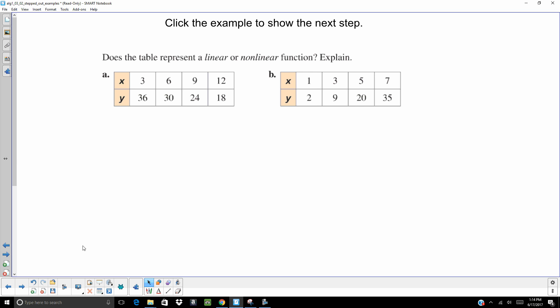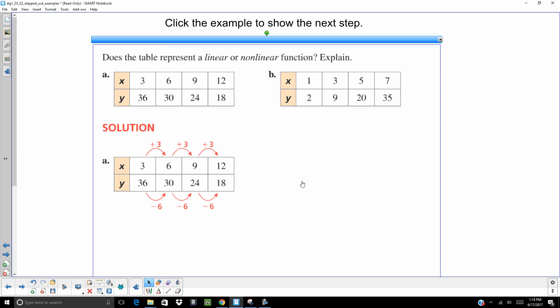On this one, instead of giving it to us as a graph, they're giving it to us as a table. And they're asking, does the table represent a linear or nonlinear function? Well, look at your X's and your Y's. You're jumping up by three each time for your X's. You're going down by six each time in your Y's. So the rate of change is constant. It is linear.